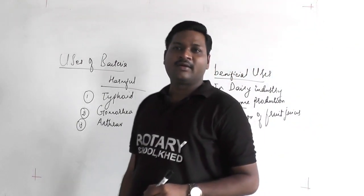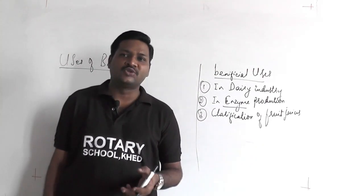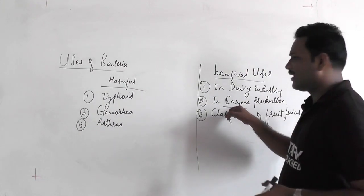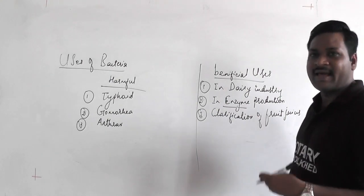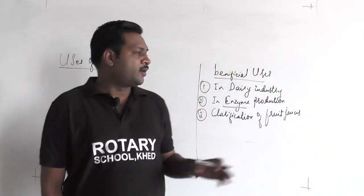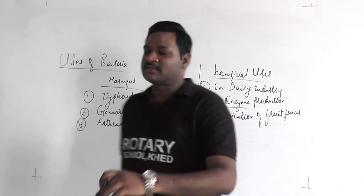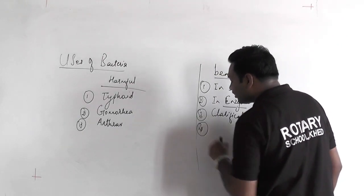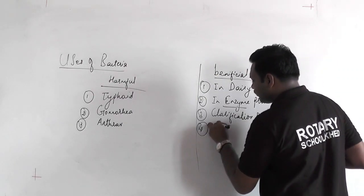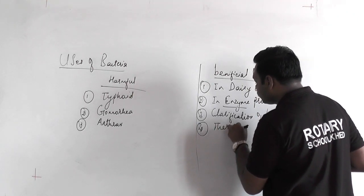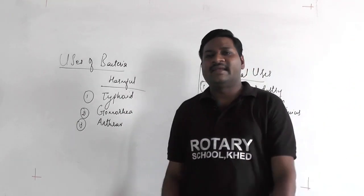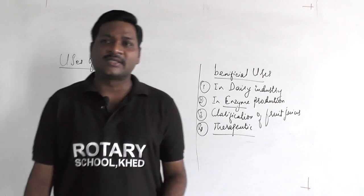In the market, different juices are crystal clear because of enzymes. Enzymes cannot be produced by humans in such huge amounts, so we use bacteria for their production. Another beneficial use of bacteria is in therapeutics. Bacteria are used for the production of various types of antibiotics — chemical substances secreted by a bacterium to inhibit the growth of another harmful bacterium.